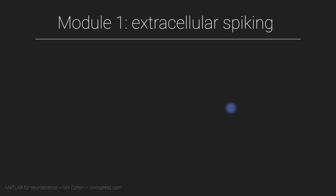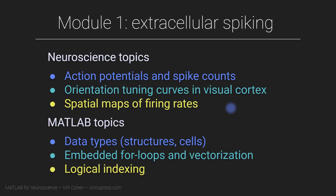Welcome to this first module of the course. We are going to focus on visualizing and analyzing some spiking data recorded from the visual cortex. In this video I'm going to give you some background about vision neuroscience so you have an idea of what kind of data we'll be working with and the reason for doing some of the analyses. The focus in MATLAB over the next several videos in this module is going to be data types, for loops and vectorizations, logical indexing, and data visualization.